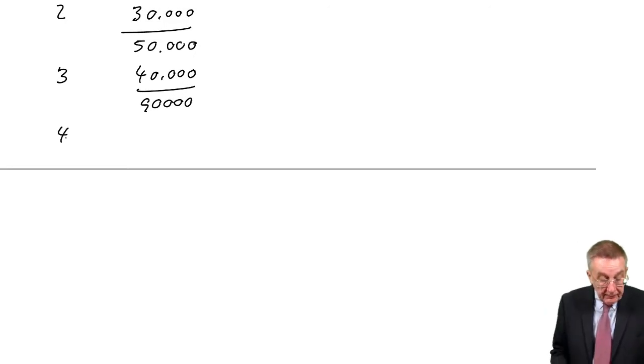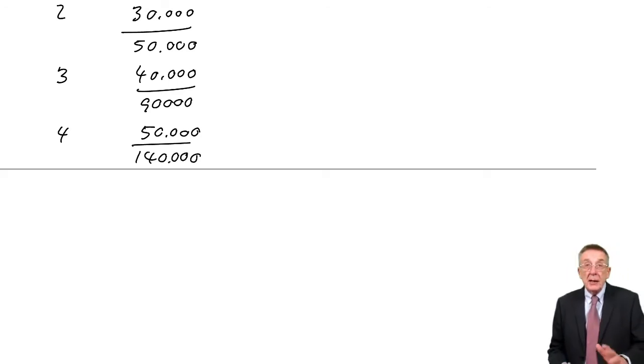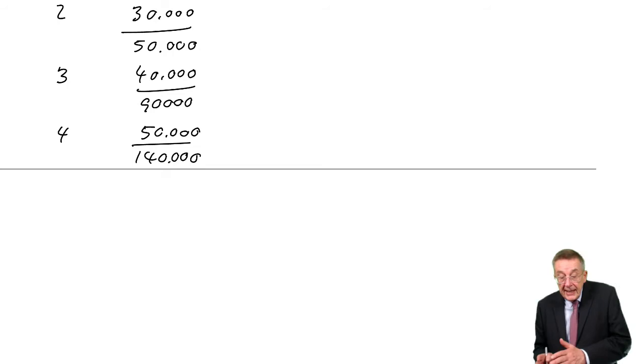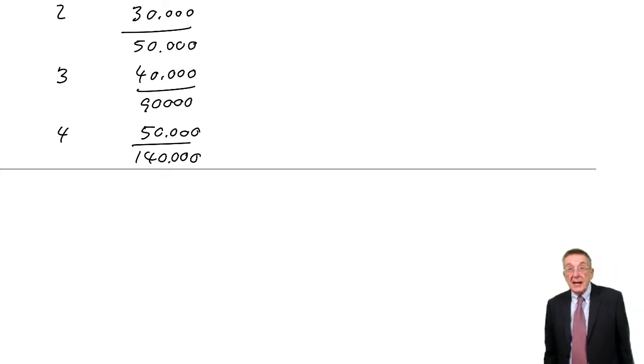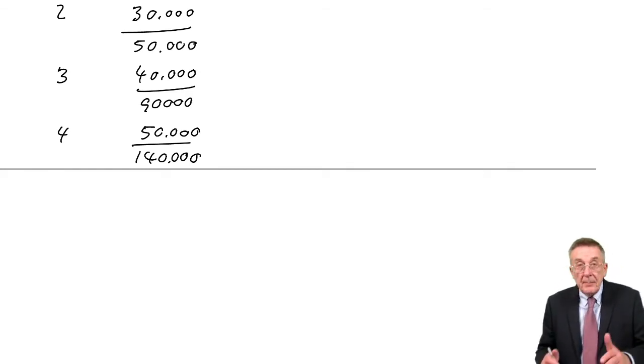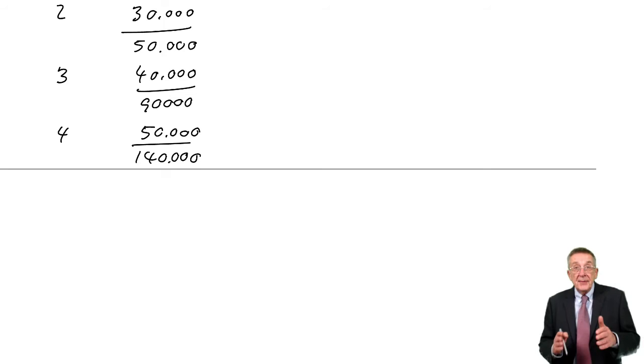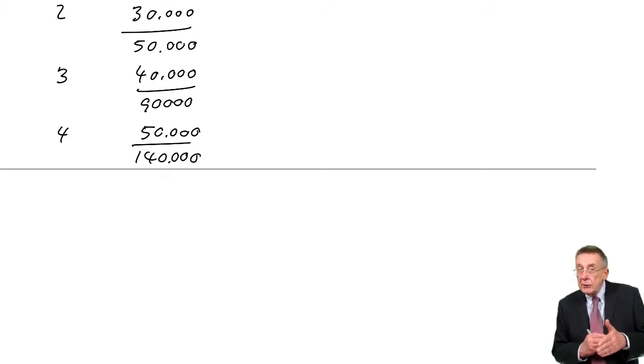In the fourth year, we get 50. So we've now had 140. We've now got back more than 100. And so certainly, it pays for itself in less than four years. It's more than three, but less than four. In the exam, they'd expect you to be more precise and to assume that the money we're getting each year, we're getting in evenly throughout the year.